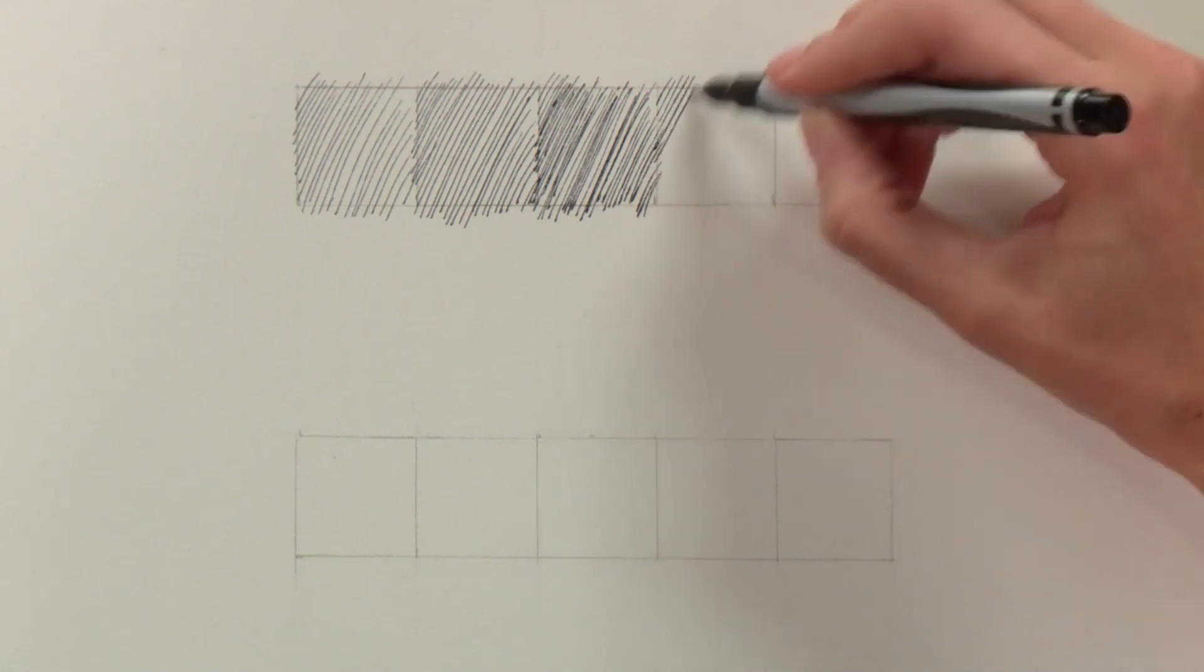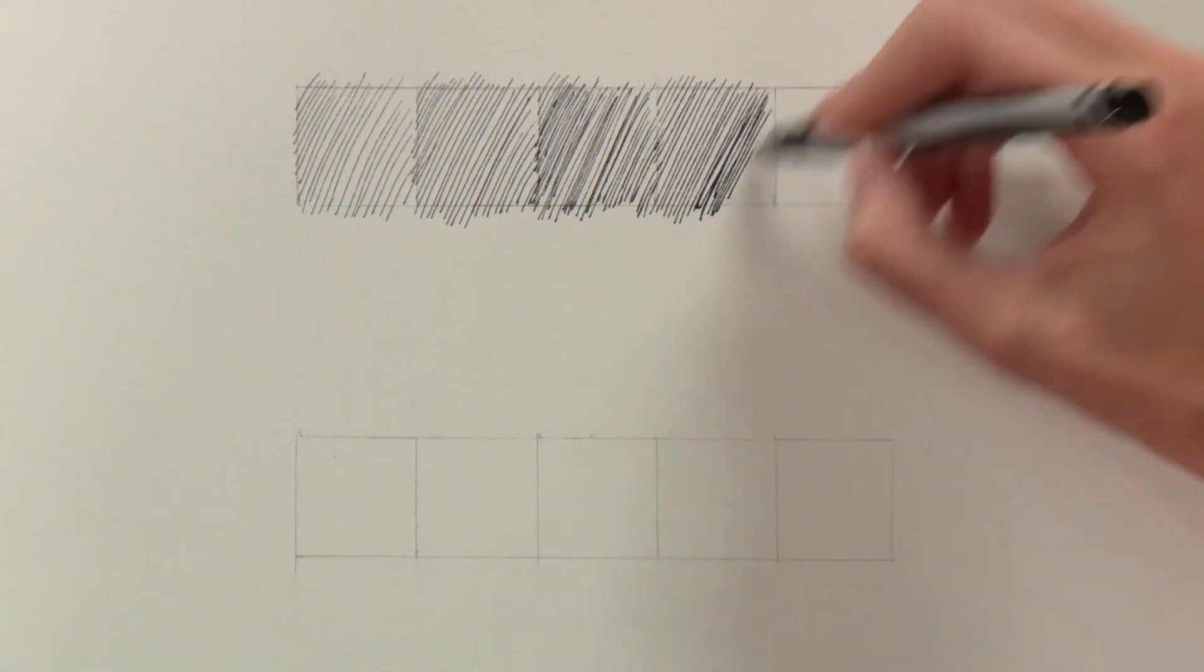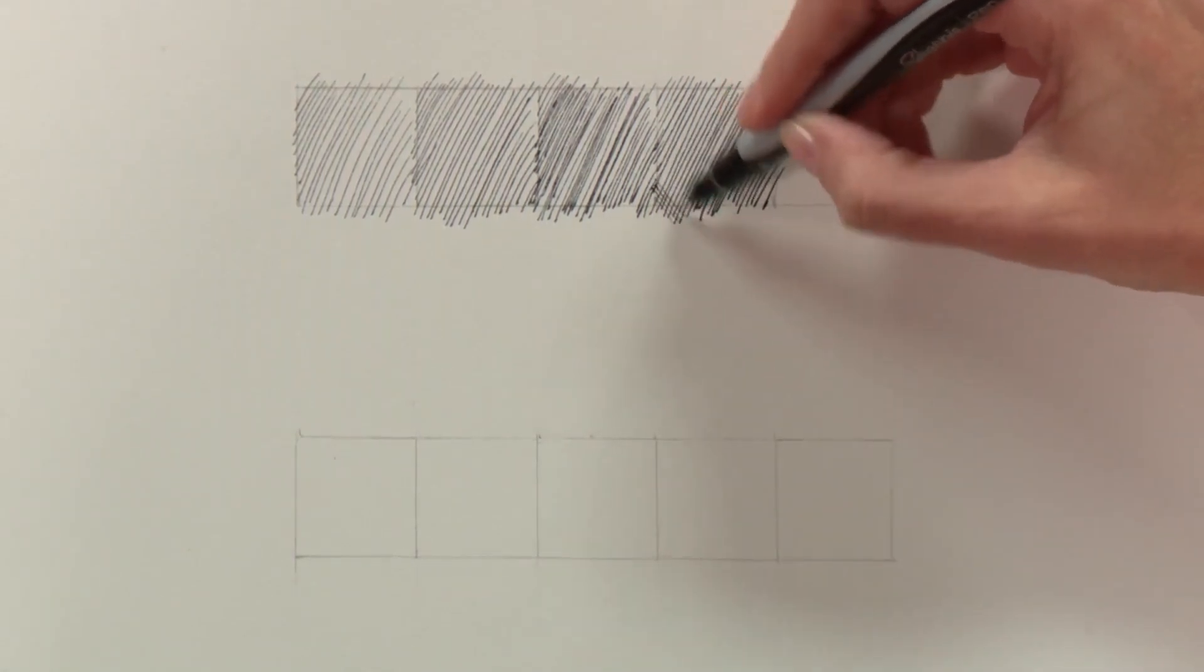I'm going to start with the cross-hatching at this point because my lines in box three were so close together, not really much room for them to get closer. So I'll lay down my first layer and then opposite that go ahead with the cross-hatching.